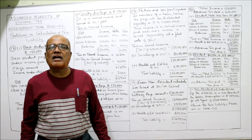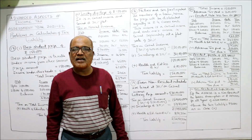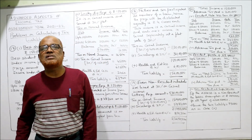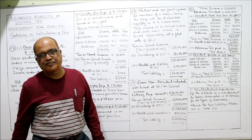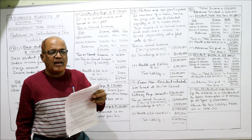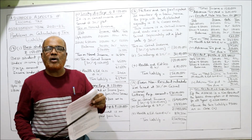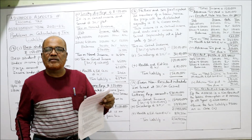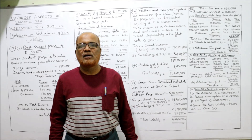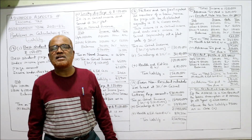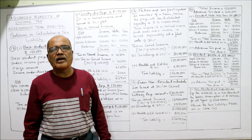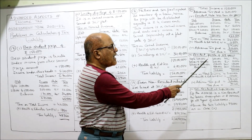Deduct the advance tax paid by the assessee: two lakh. So tax due is seventy-three thousand. Case 2: if the assessee is a resident female person of 68 years. Male or female makes no difference, but 68 years means senior citizen. For senior citizens the basic exemption limit is three lakh — that is the only difference.